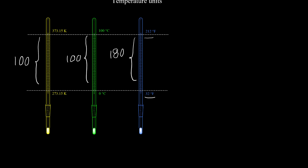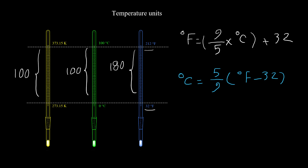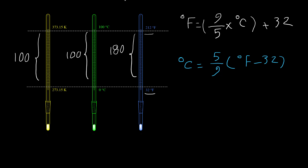The equation for converting Celsius to Fahrenheit is: Fahrenheit = (9/5) × Celsius + 32. Let's work through an example: convert 25°C to Fahrenheit. Fahrenheit = (9/5) × 25 + 32.